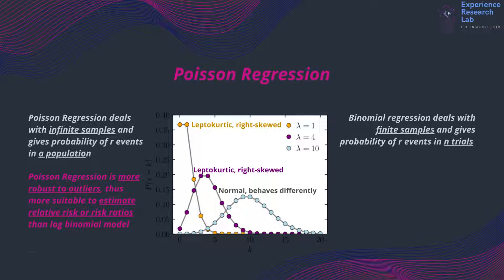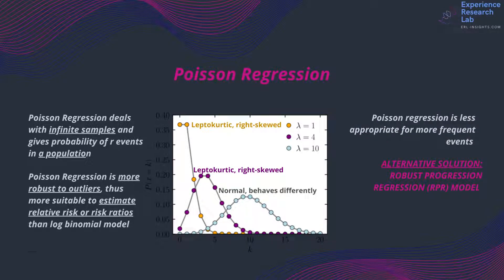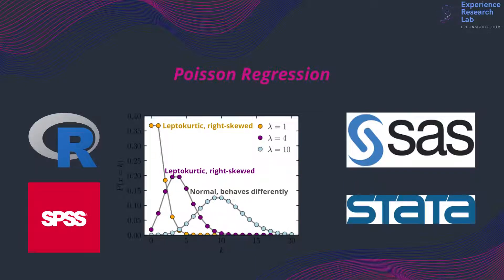Therefore, it is also suitable to estimate relative risk or risk ratio for binary outcomes. Despite the advantages, some say that Poisson regression has disadvantages. The assumptions regarding the distribution of the underlying data make it less appropriate for some cases, such as alcohol consumption. However, there is an alternative solution to this. The robust Poisson regression model proposes the inference of regression parameters suitable for more general count data.